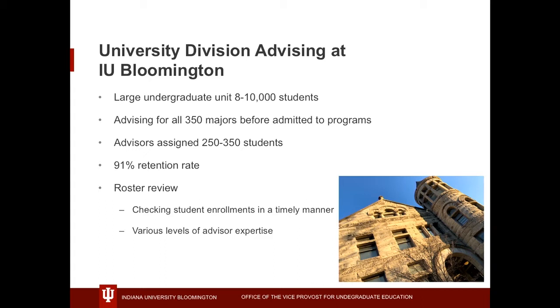There's a time crunch during that period, and sometimes it's hard. We're often using Excel spreadsheets or different filters to try to find the correct students. There are also various levels of advisor expertise. In 2012, the median years of time an advisor had been at our unit was nine years, and now it's down to about 3.5. So we have a lot of new advisors without as much institutional knowledge.